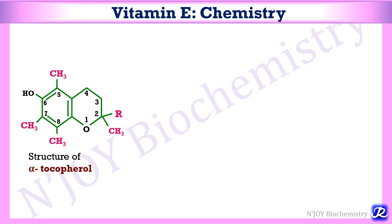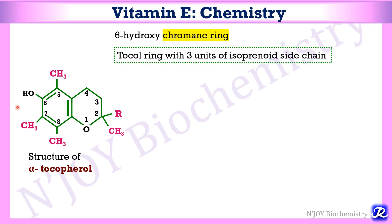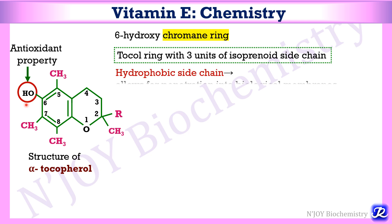This is the structure of vitamin E, that is alpha-tocopherol. Tocopherols are derivatives of a 6-hydroxychromane ring, because the hydroxyl group is attached at the 6th position in the chromane ring. It is a tocopherol ring with 3 units of isoprenoid side chain. This hydroxyl group can donate hydrogen to reduce free radicals, and the antioxidant property of vitamin E is due to this chromane ring. It has a hydrophobic side chain which allows penetration into biological membranes.